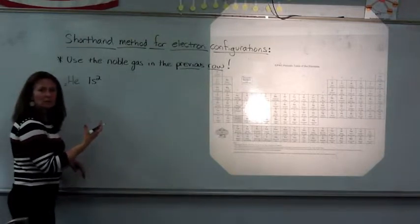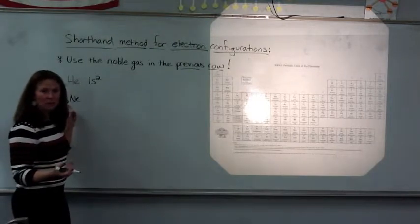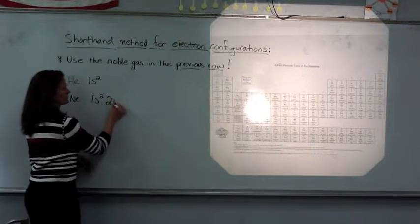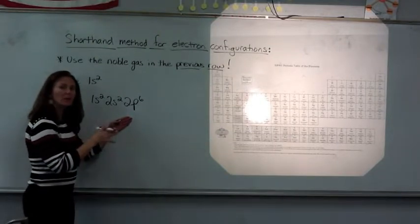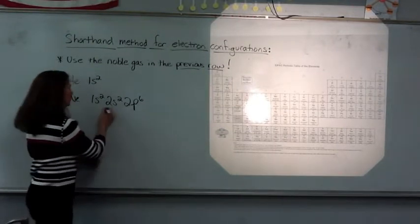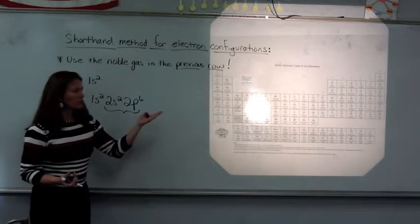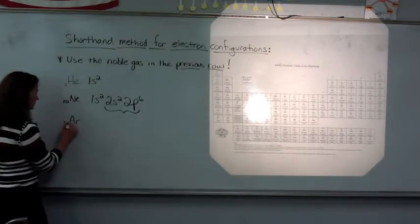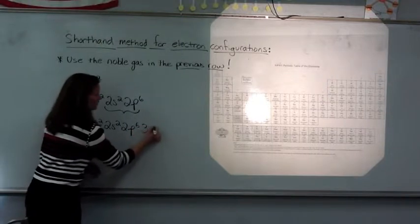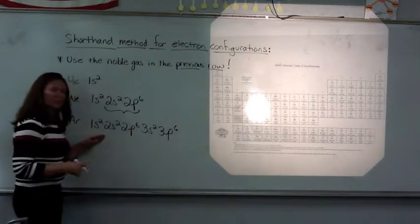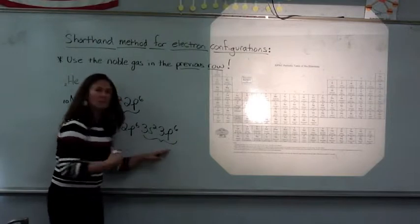The next noble gas listed on the periodic chart is neon. Atomic number is 10, so it has 10 protons and 10 electrons. With generally all noble gas configurations, the outermost S and P sub-levels are completely filled, which is why they have those 8 valence electrons in a stable configuration. The next noble gas, argon, has 18 electrons: 1s2, 2s2, 2p6, and then the third energy level also has filled outermost S and P sub-levels, signifying those 8 valence electrons.